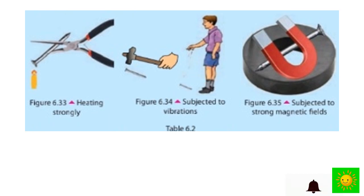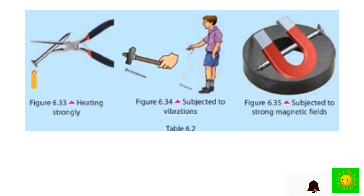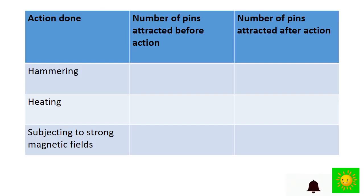Subject each nail to the following treatments: vibration by hammering, heat of high temperature, and moving it to and from close to a strong magnet. Then bring the pins close to each nail again and count the number of pins attracted. After heating strongly, subjecting to vibration, and subjecting to a strong magnetic field, complete the results table. It will be clear that magnetic power fades due to vibration, temperature, and being subjected to a strong magnetic field.